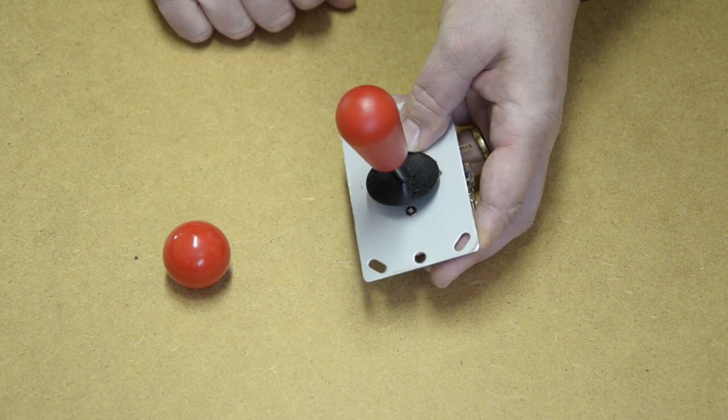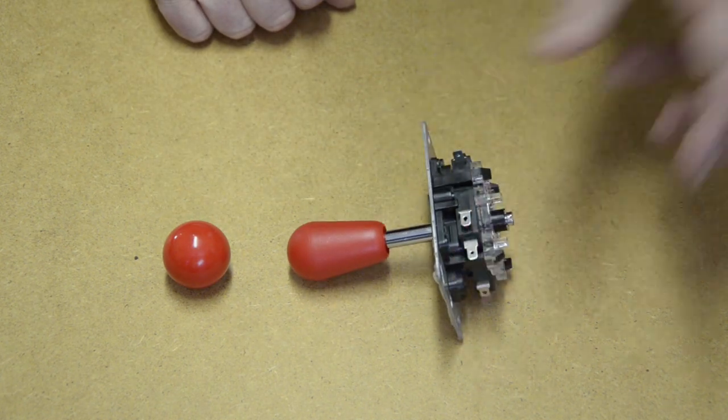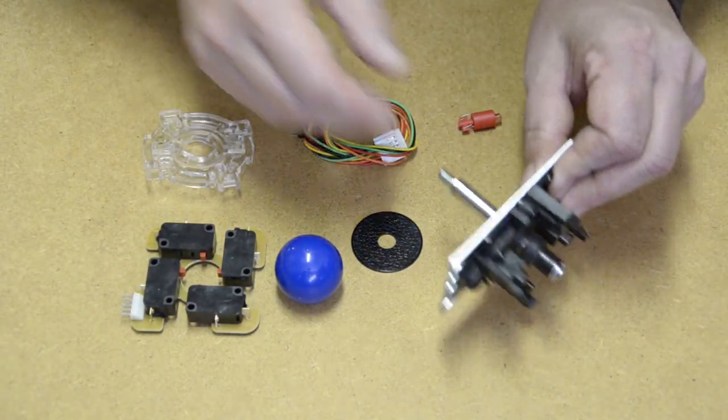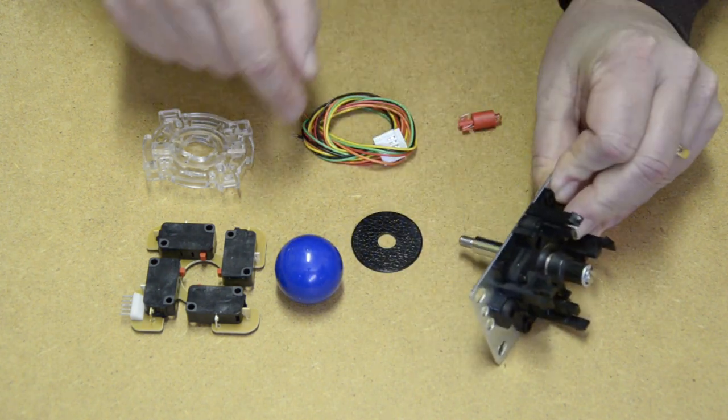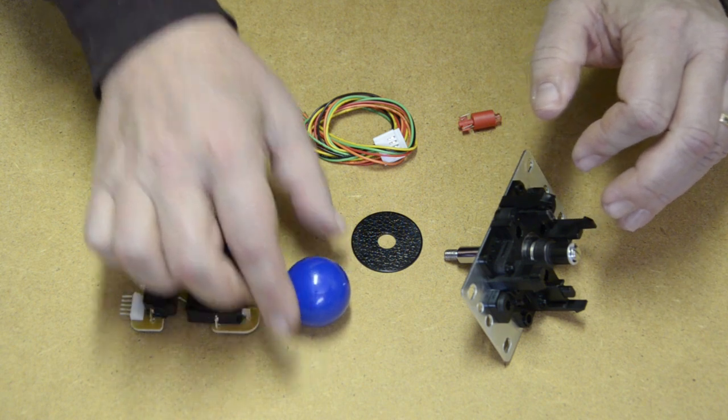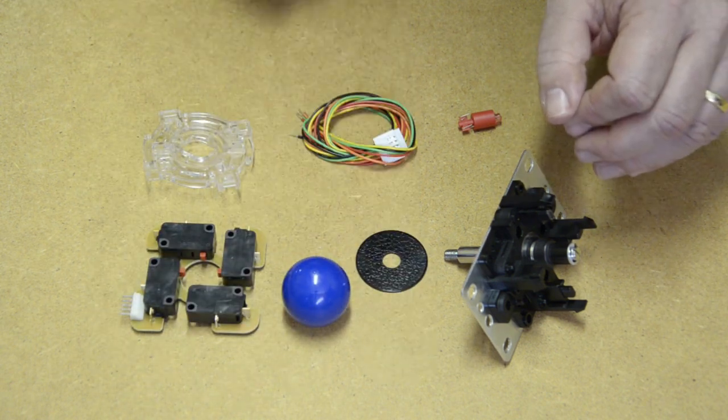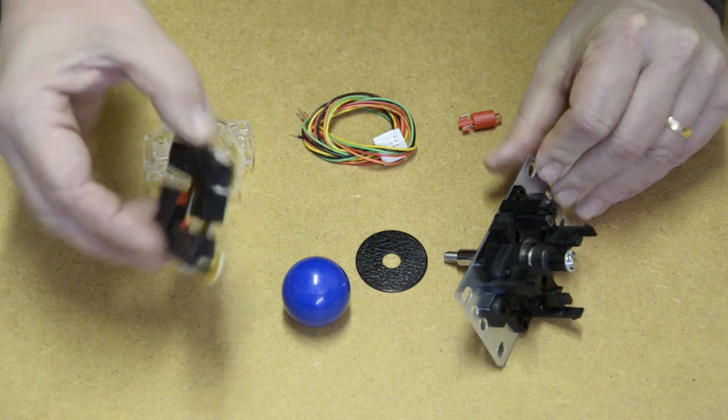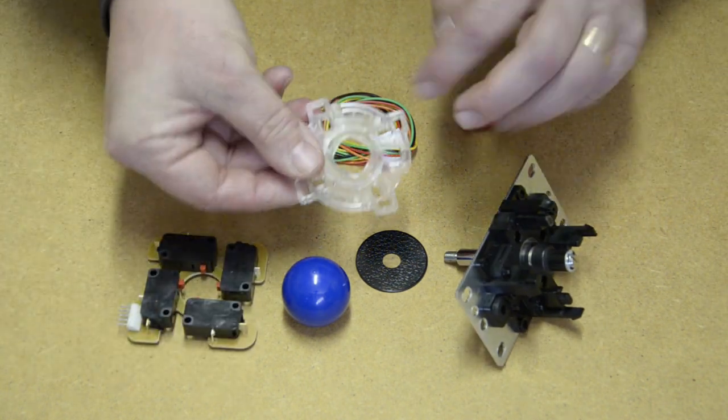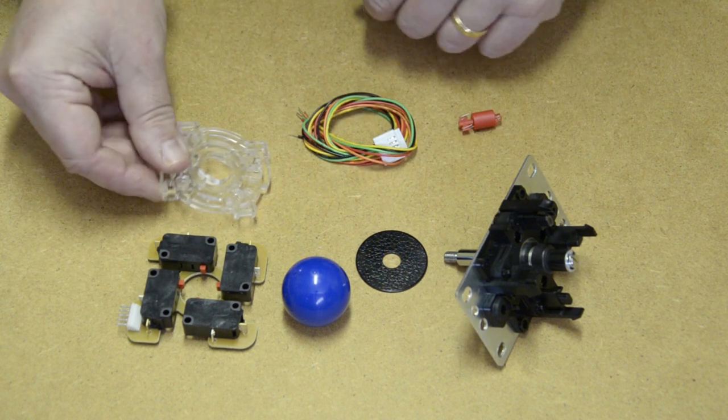Generally speaking, the parts of a stick are the shaft and possibly a shaft cover, its top, a dust cover, the base plate, the switches, usually microswitches, the restrictor plate and its gate, some connectors, possibly leads, and there are usually some springs or e-clips and other materials.